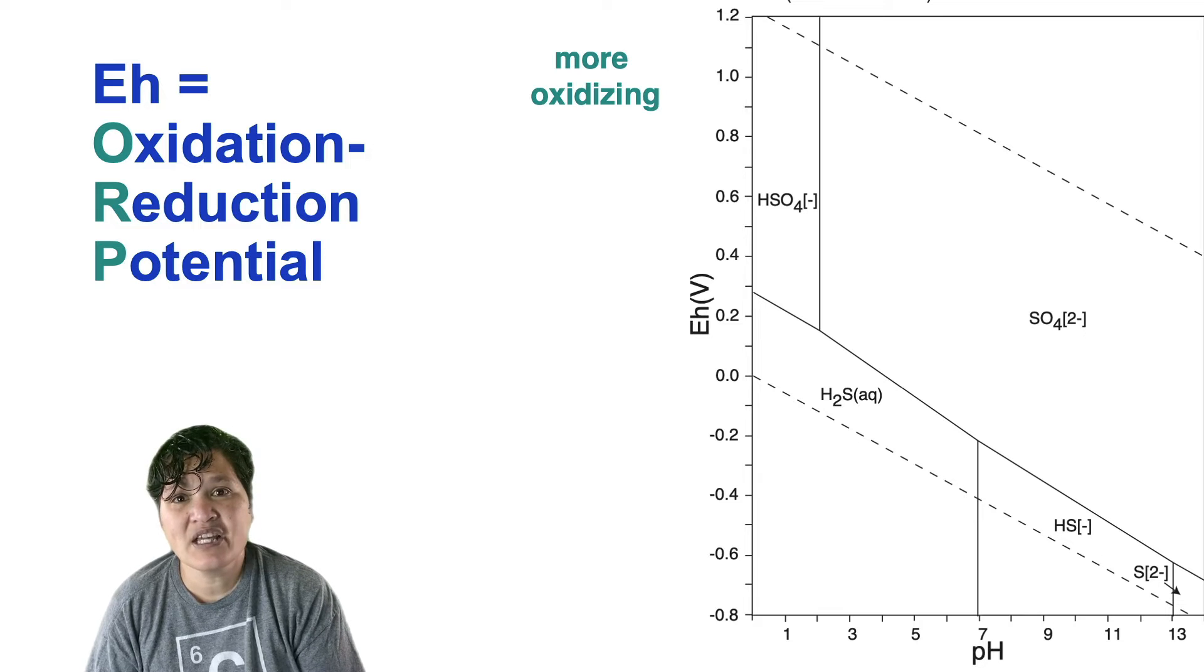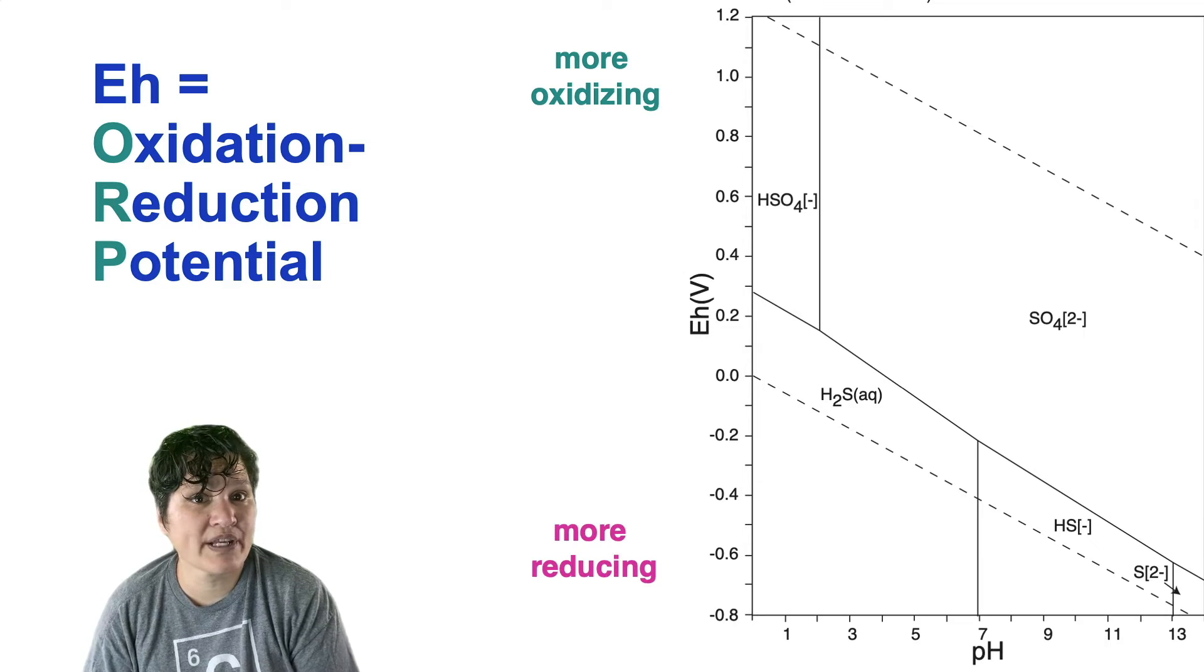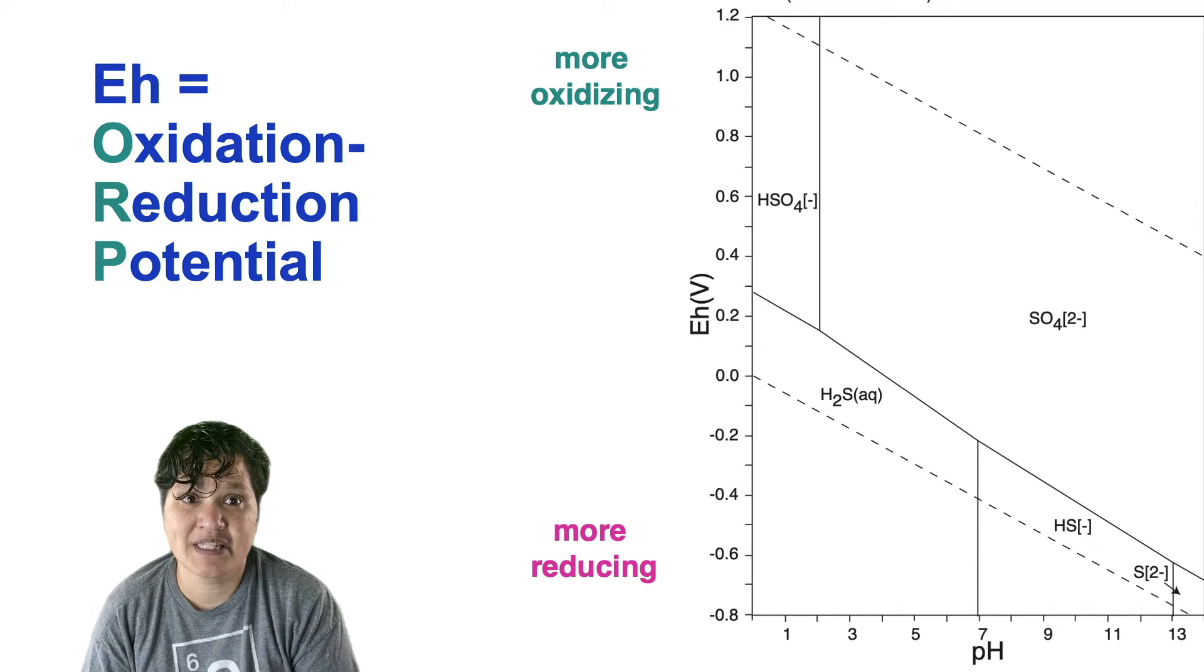The way the EH scale is set up, the higher the number, the more oxidizing your environment is. The lower the number, the more reducing your environment is.